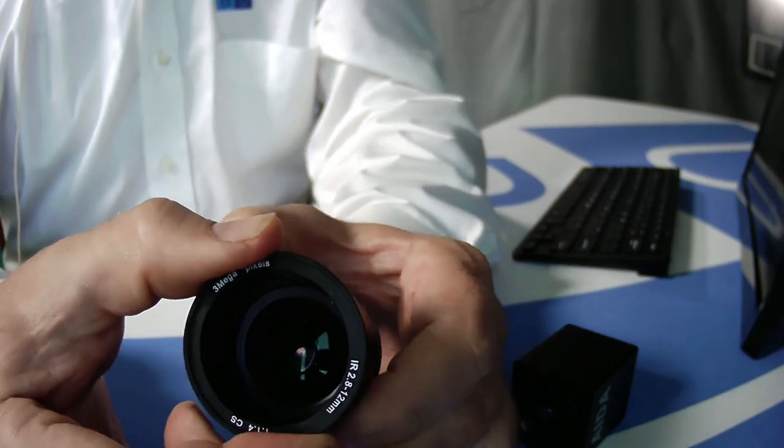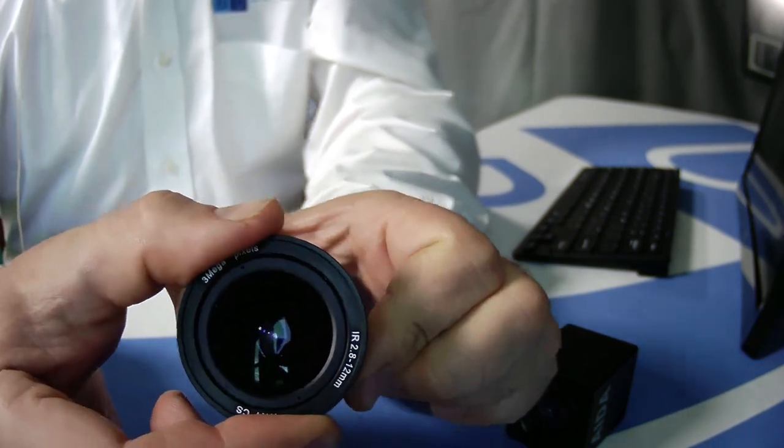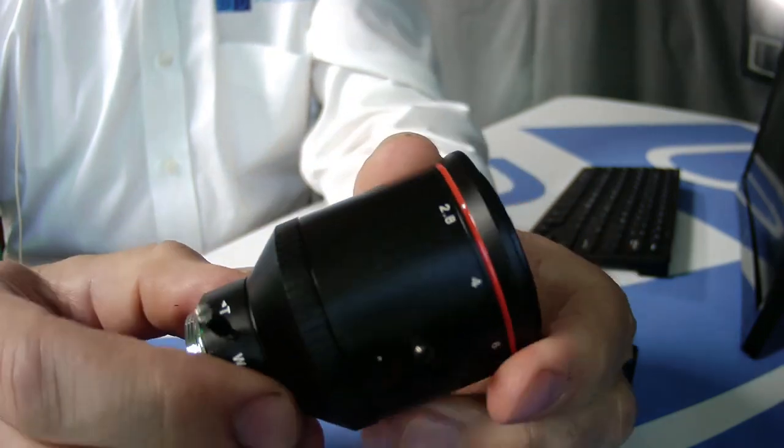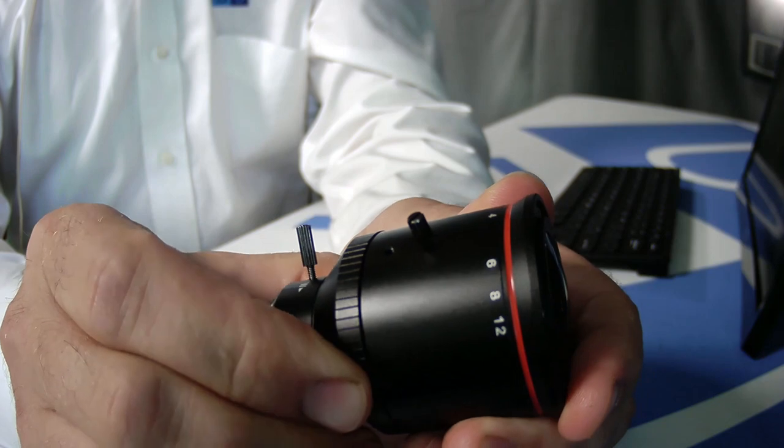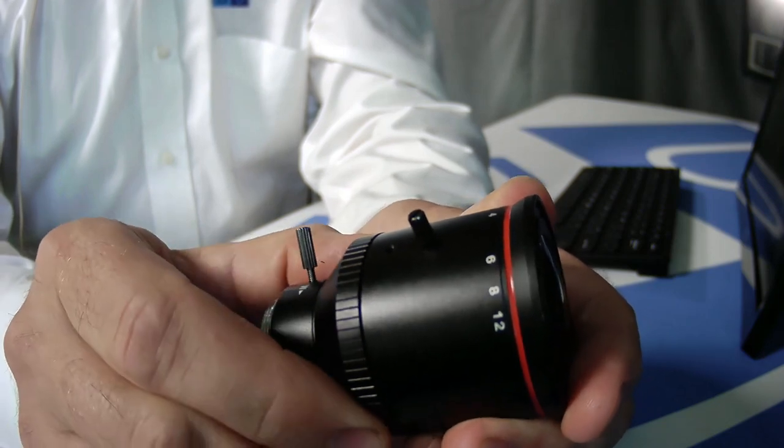We also have this unmarked ring here, which is for iris. So again we can adjust for ambient light conditions.